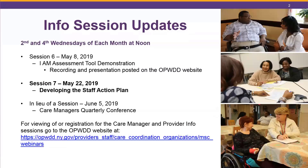Our next session, in lieu of our regular session, is going to be our Quarterly Care Managers Conference. There's a variety of topics, including reviewing the Coordinated Assessment System (CAS), the reissued Staff Action Plan, transition to People First Care Coordination ADM, Voting Rights, and several other topics. That agenda and materials will be shared prior to the June 5th conference. Registration for the Quarterly Care Managers Conference is available through SLMS — see advisory number 14-2019 for the link.